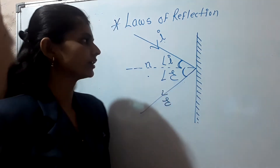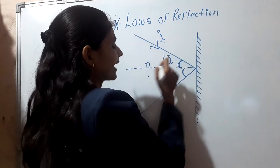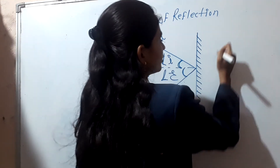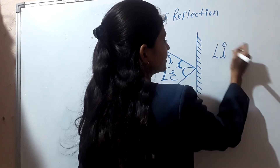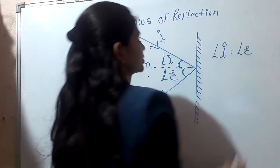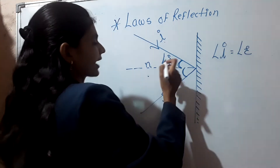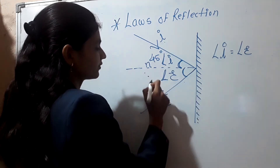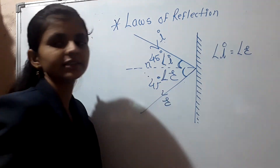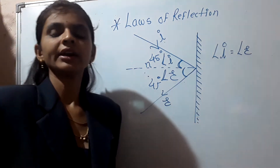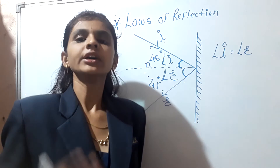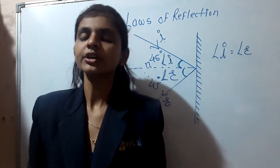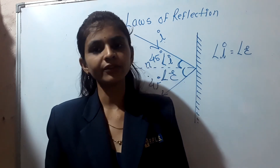The second law of reflection states that the angle of incidence is equal to the angle of reflection. This means that if the angle between the normal ray and the incident ray is 45 degrees, then the angle between the normal and the reflected ray should also be 45 degrees.